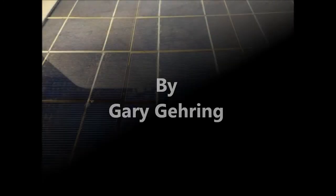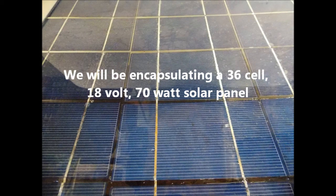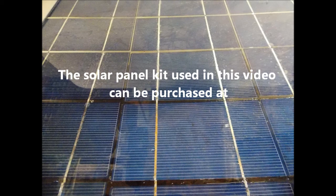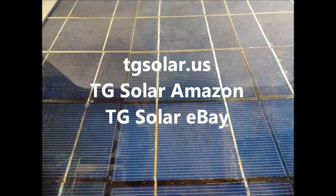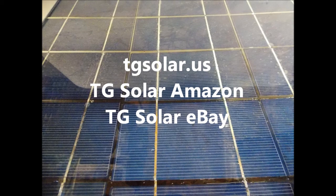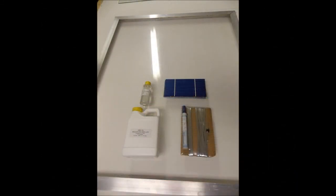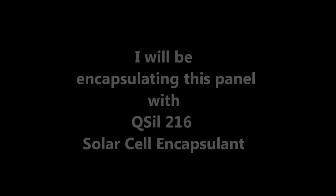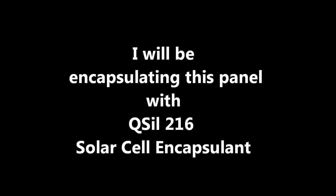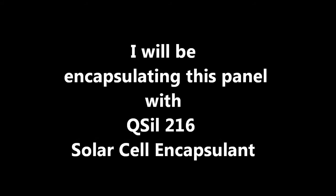For today's demonstration, we will be using a 36-cell poly solar panel kit. This kit is available through our website TGSolar.us and through Amazon and eBay at TG Solar. The solar panel kit consists of glass, frame, 36 cells, a tab wire kit, and the encapsulant QCL216, which is a platinum-based encapsulant made here in the United States.